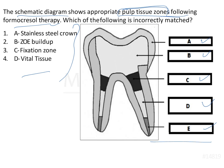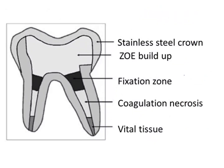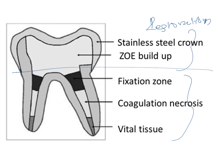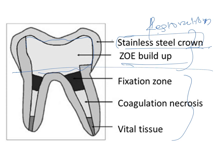Coming to the diagram explanation: the radicular area is very important. The coronal area involves only the restoration part. The outer area is a stainless steel crown, given to enhance the strength of the tooth. Below this is zinc oxide buildup, used to form the crown base and withhold the stainless steel crown, replacing tooth structure removed due to caries exposure.